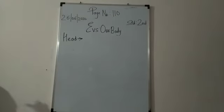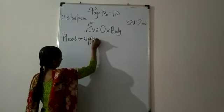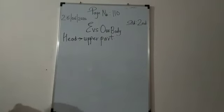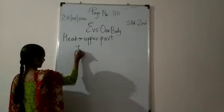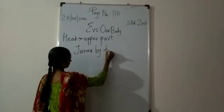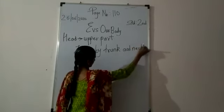The head is the upper part of our body. It is our first part. We can say that it is the upper part of our body. Next, it is joined to the trunk by the neck. Everybody has a neck, so the neck and the head are joined together. We can say that it is joined by the trunk and neck.